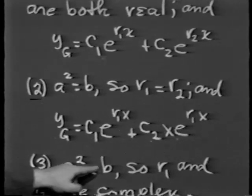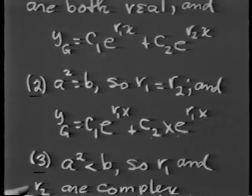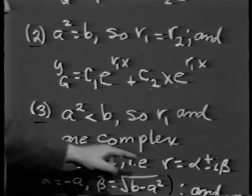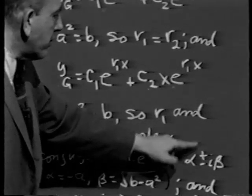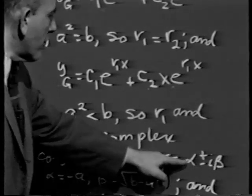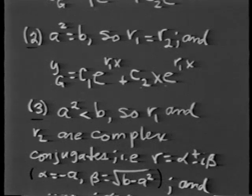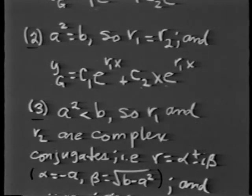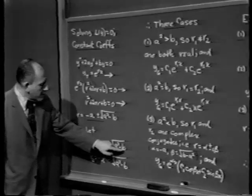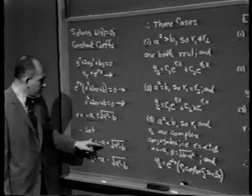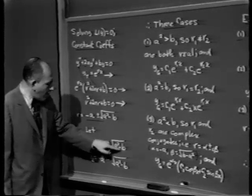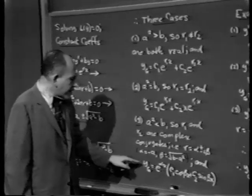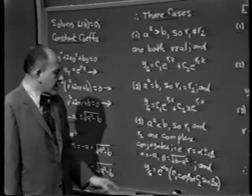In Case 3, a squared is less than b, meaning r1 and r2 are complex conjugates, so r has the form of a real number plus or minus i times a real number. Calling the real part alpha and the imaginary part beta: alpha plays the role of negative a, and beta is the square root of b minus a squared. In this case, the general solution is a very interesting linear combination.